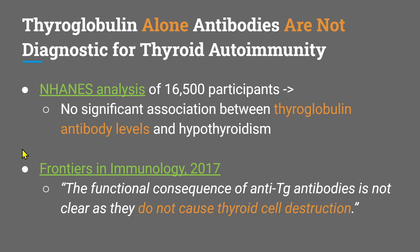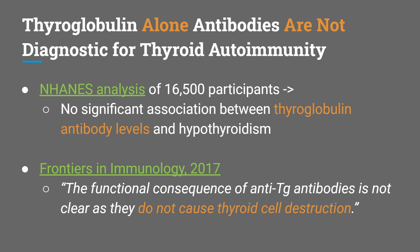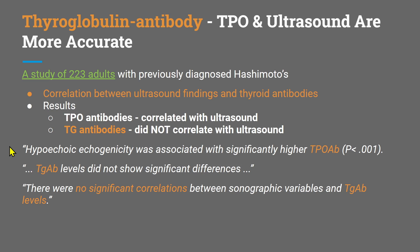Here are two more data points that support this. In any body of literature, you're going to find outliers, but the totality of evidence is what we should look to as the truth. The NHANES data set — a sample of over 16,000 individuals — found no significant association between thyroglobulin antibody levels and hypothyroid. And from Frontiers in Immunology: "The functional consequence of antithyroglobulin antibodies is not clear, as they do not cause thyroid cell destruction." These data points are why caution is recommended regarding the interpretation of thyroglobulin antibody alone.